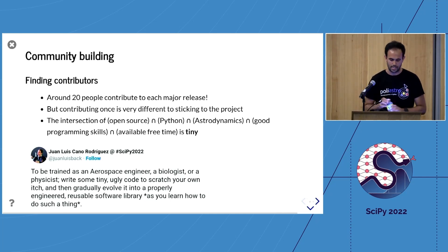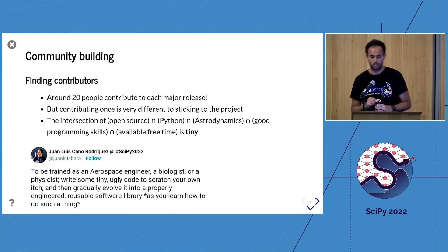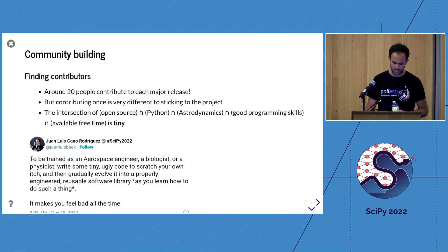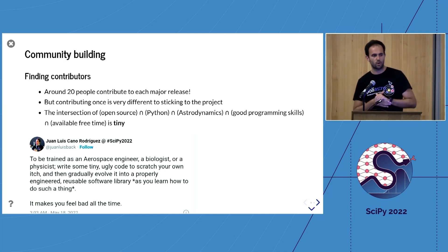The truth is that about 18 to 20 people contribute to every release, which is a success for me. But contributing once is very different to sticking to the project. We haven't even been super successful at keeping Google Summer of Code students around, for example. Now after nine years, the core team is still Jorge and I. The truth is that the intersection of open source with Python, astrodynamics, good programming skills, and free time is tiny. There's this Twitter thread that I wrote some days ago, and many people resonated with this—it's very difficult. I'm sure many of you feel the same—to come from a non-computer science background and then having to learn how to do object-oriented programming and absolutely everything.